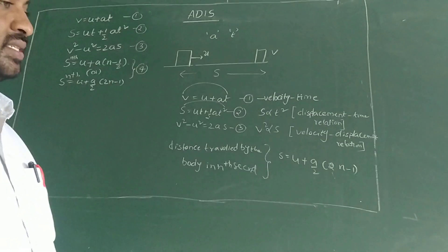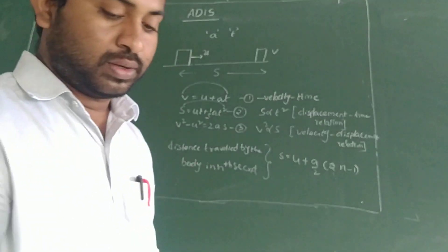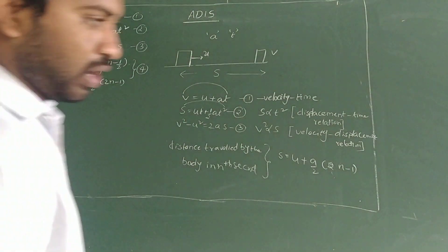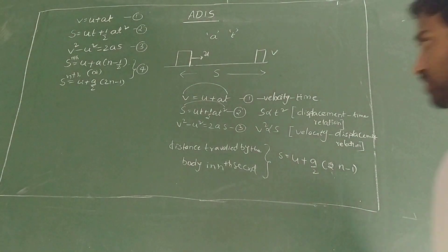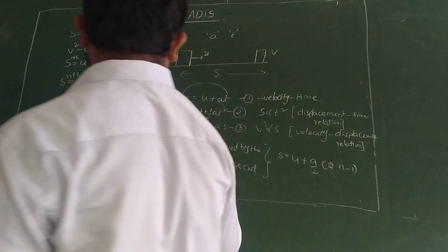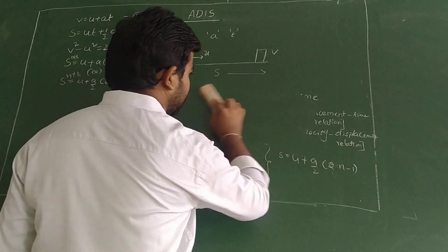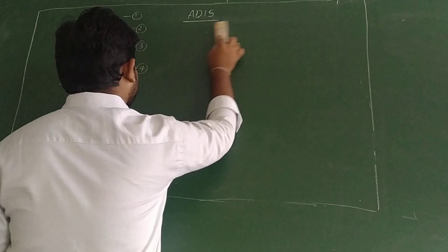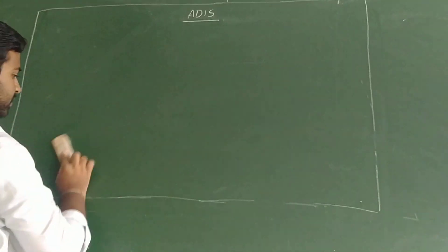Our aim now is to derive the equations of motion individually. In CBSE we have already derived the first three equations. Today I am going to discuss with you one by one the derivation of all four equations of motion.